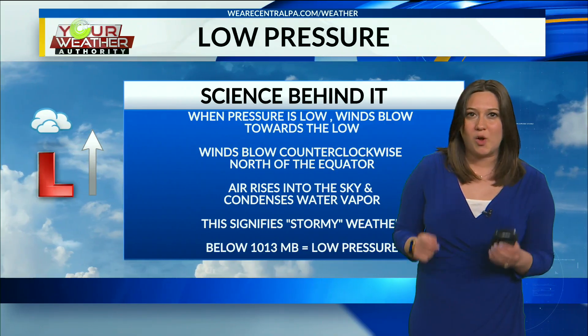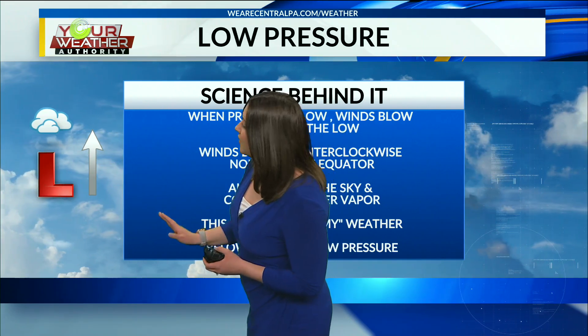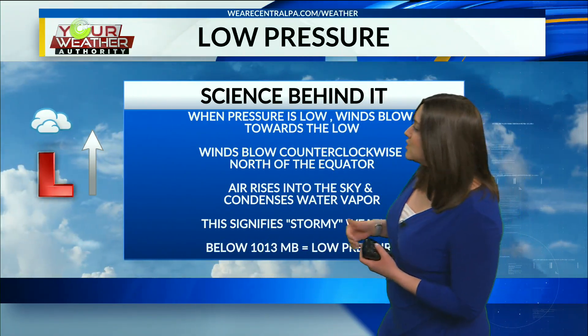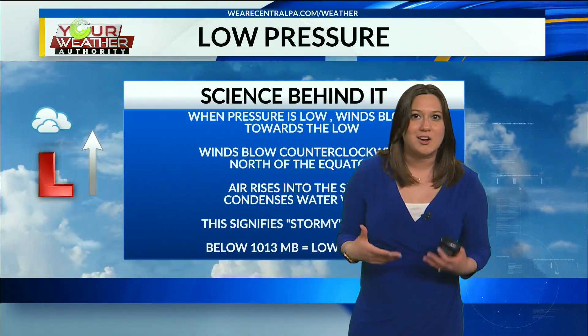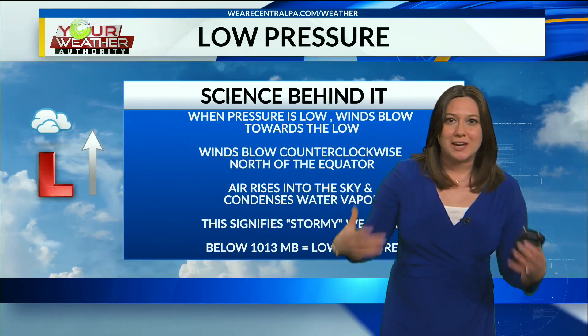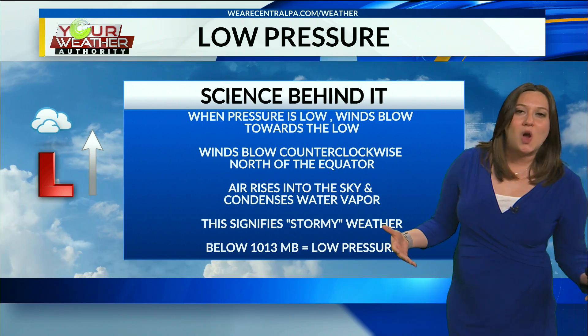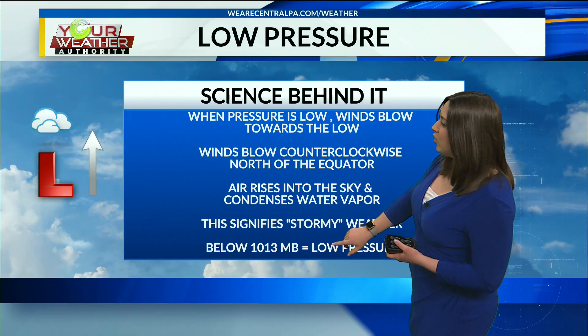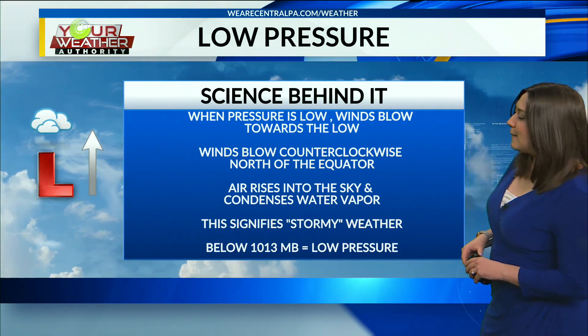Now let's explain low pressure. When the pressure is low, winds blow towards the low pressure system and they move counterclockwise around the low here in the northern hemisphere. Air is rising into the sky and it condenses — there are large bodies of water and ocean contributing moisture. As air rises in these low pressure areas, it condenses water vapor, creating clouds and stormy weather, whether that's snow in winter or storms and rain in summer, spring, and fall. Low pressure occurs below 1013 millibars.